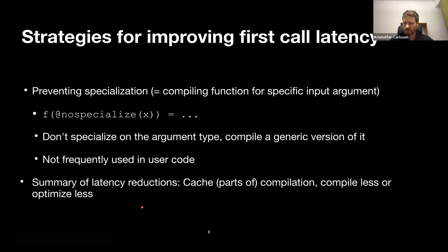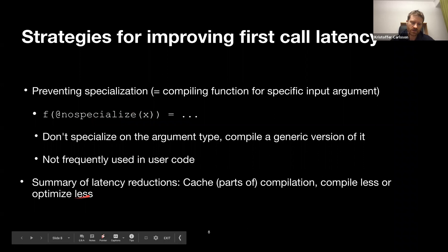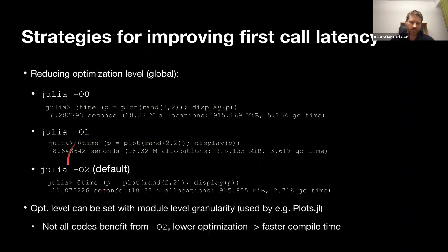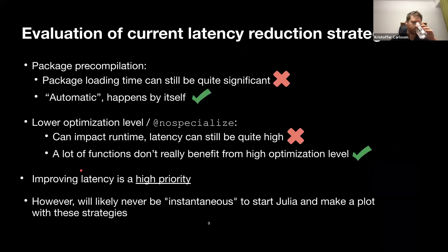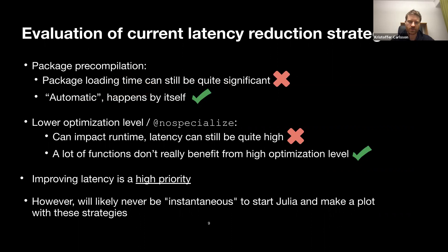To summarize latency reductions so far: we can cache compilation (like pre-compilation), compile less code using @nospecialize, or optimize less using optimization flags. Package pre-compilation is automatic — it just happens by itself. Lowering optimization or using @nospecialize can impact runtime, but many functions don't benefit much from high optimization, so in those cases it's basically lower latency for free.